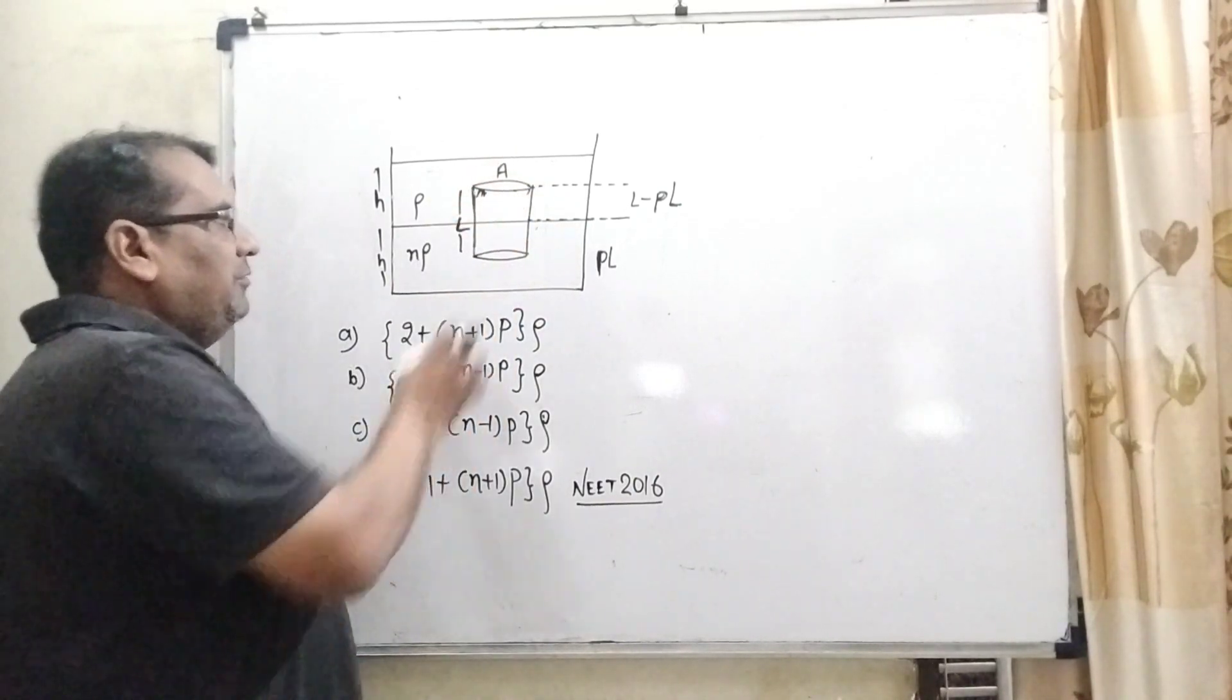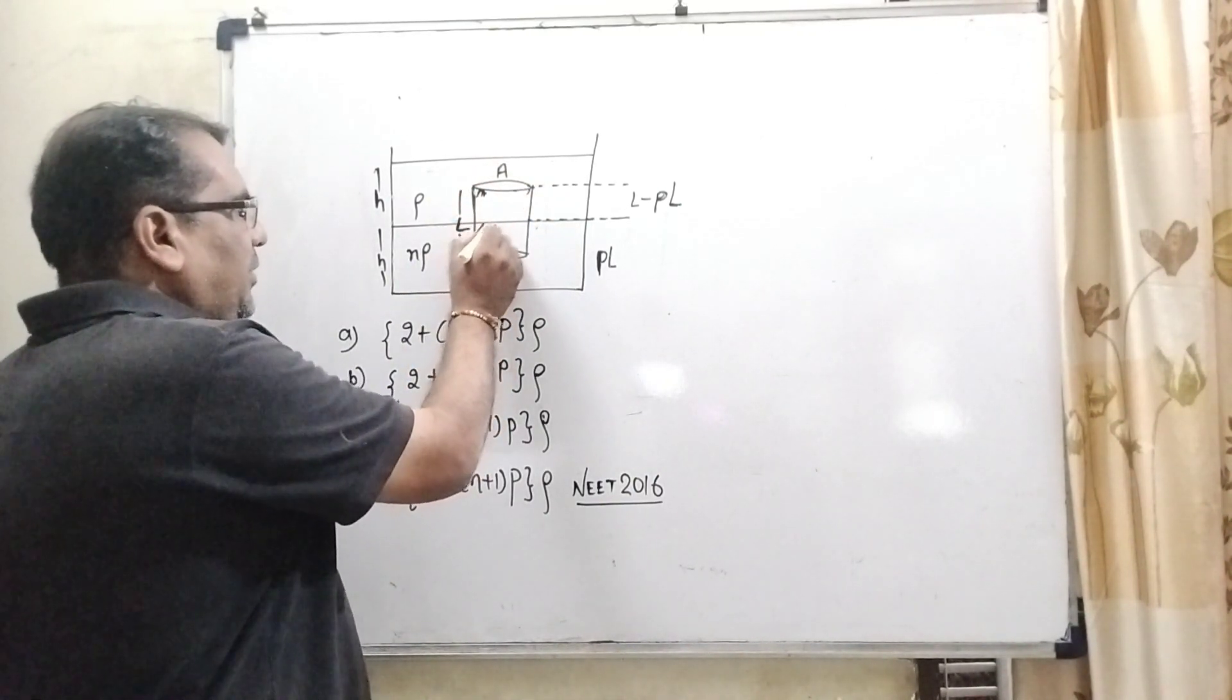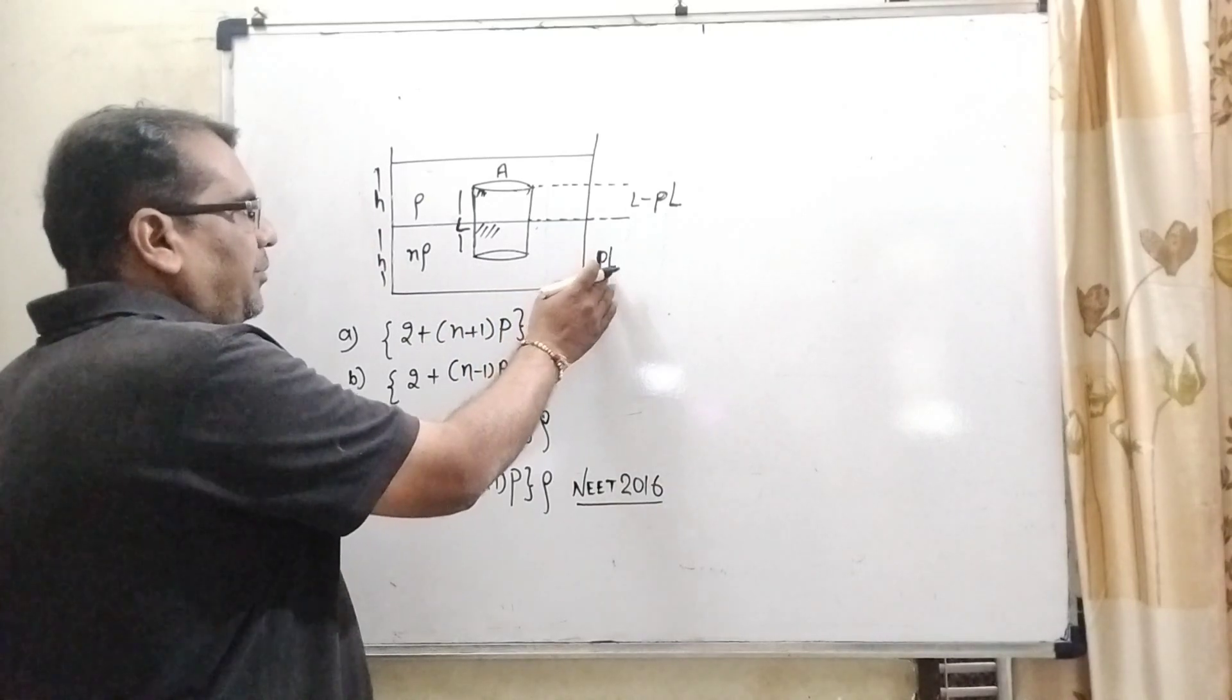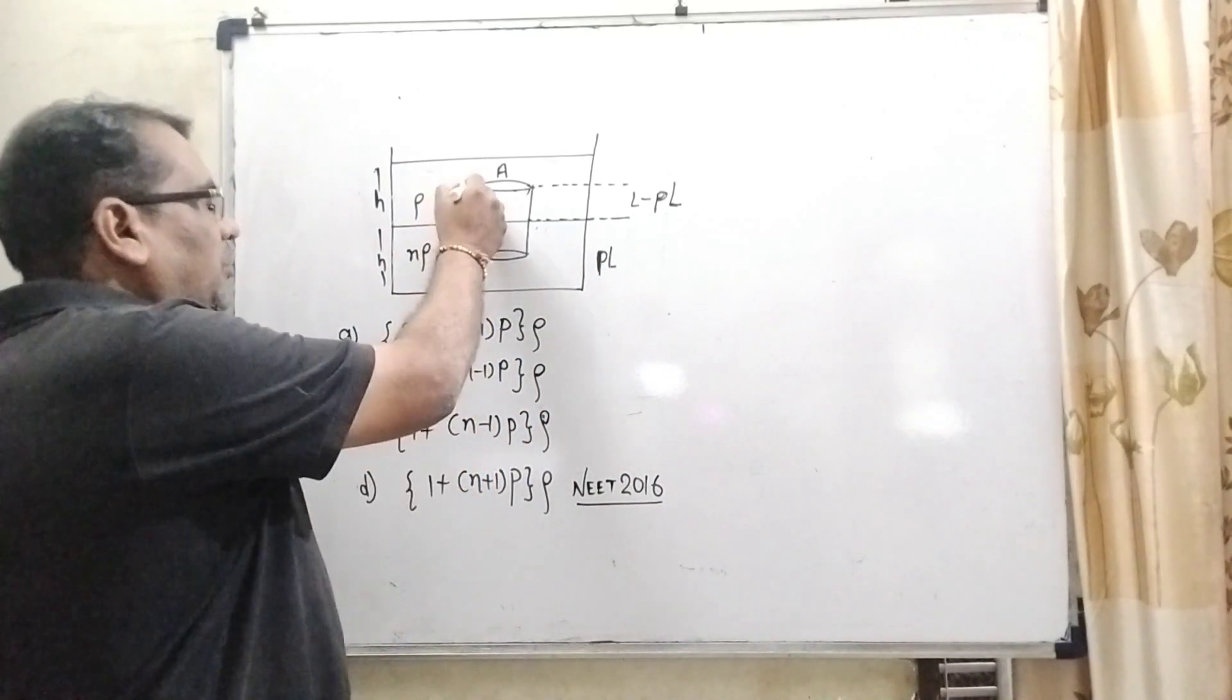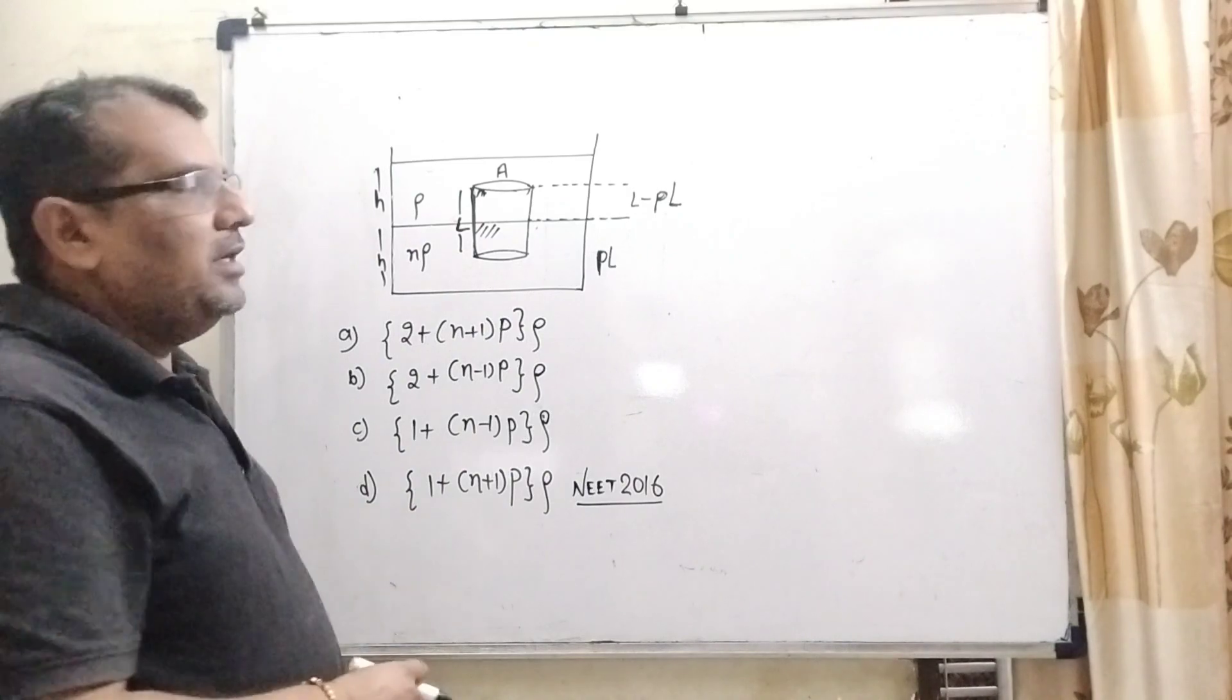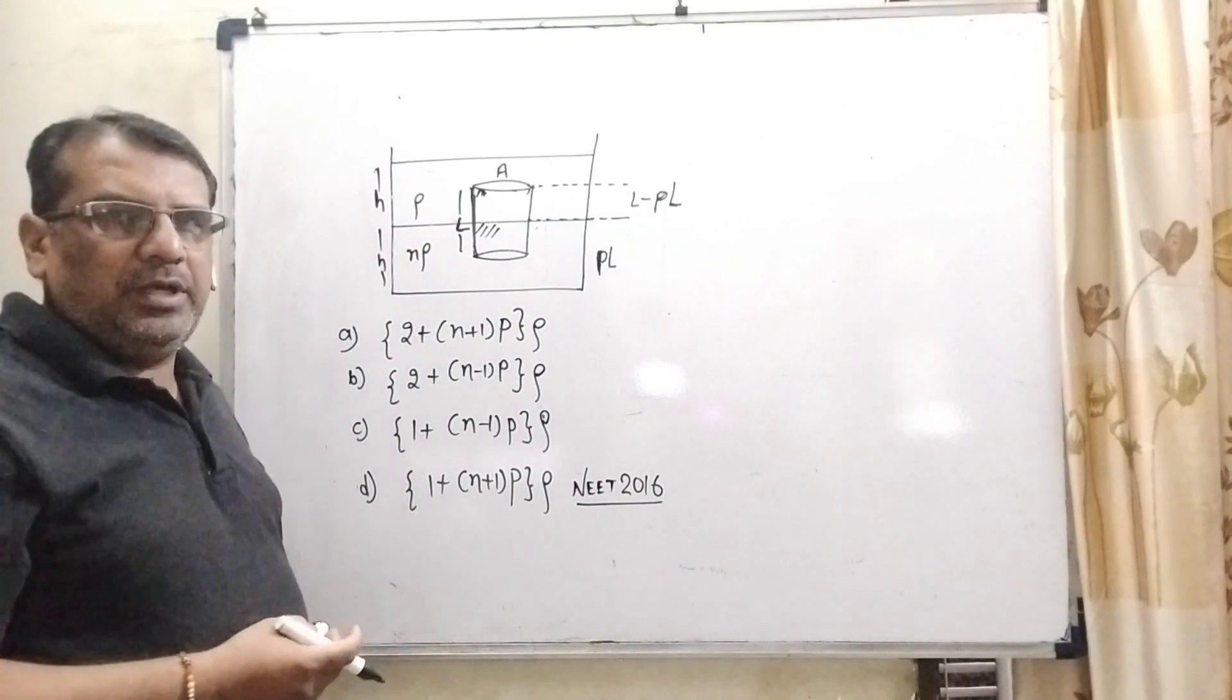And here a cylinder which has cross-section area A and length L is dipped, and the dipped part in the higher density liquid is pL. So therefore, total length is L, and the remaining distance is L minus pL. Is it okay?